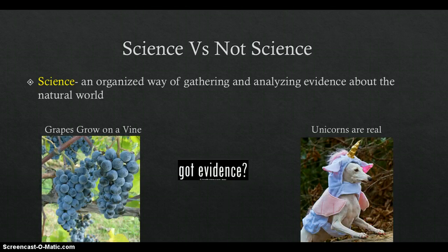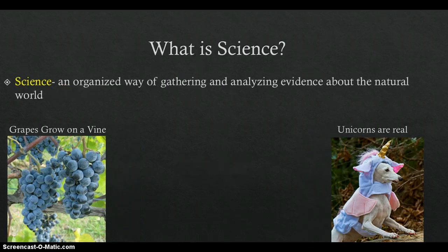Let's take a look at the following claims. Grapes grow on vines and unicorns are real.